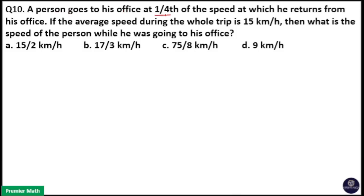A person goes to his office at one-fourth of the speed at which he returns from his office. If the average speed during the whole trip is 15 kilometers per hour, then what is the speed of the person while he was going to his office?